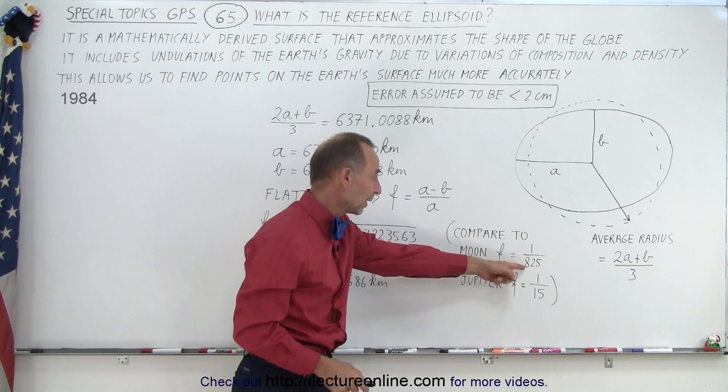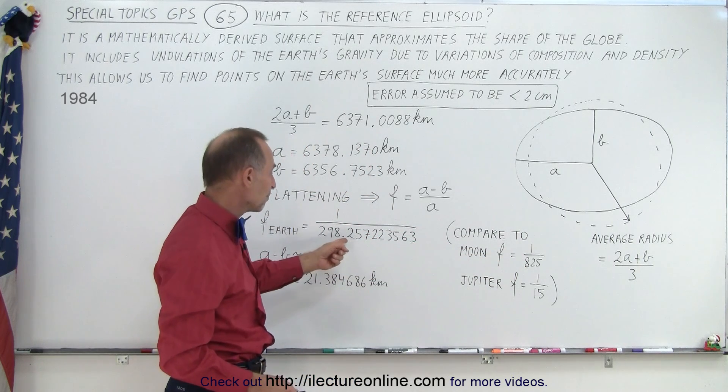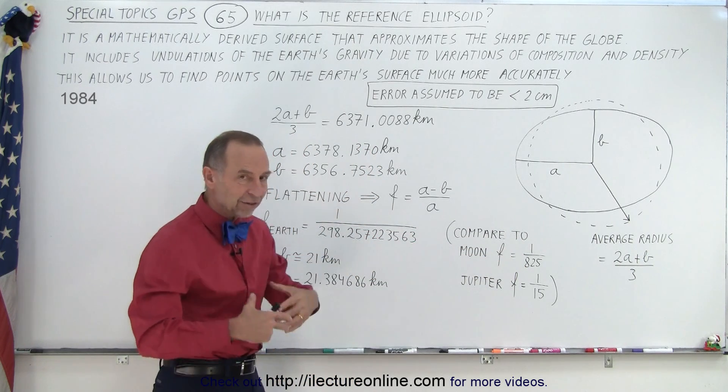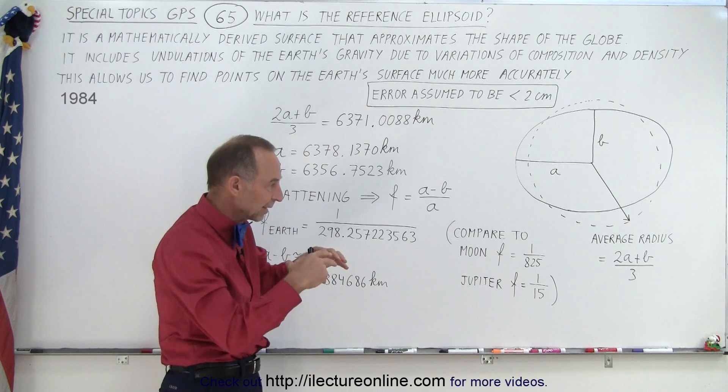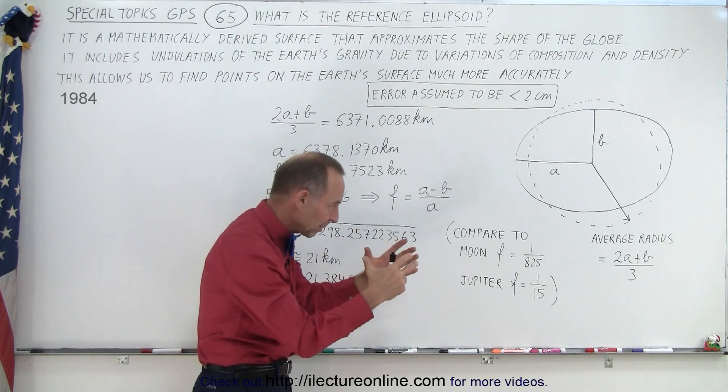Now, compared to the Moon, it's 1 over 825. So the bigger the denominator, the less ellipsoid it is, the more it tends to be a sphere. And the smaller the number, the more elliptical it is.